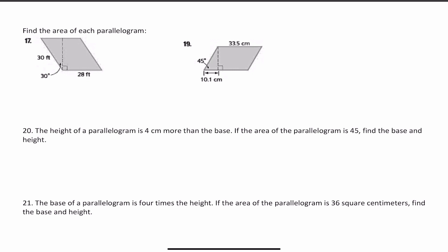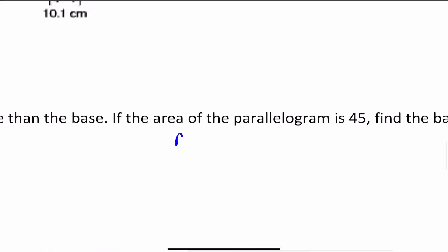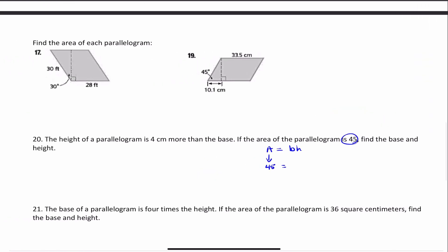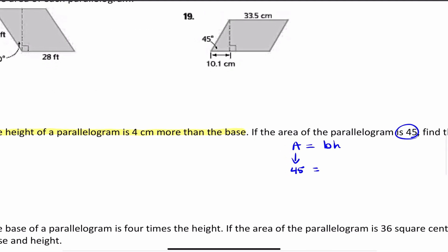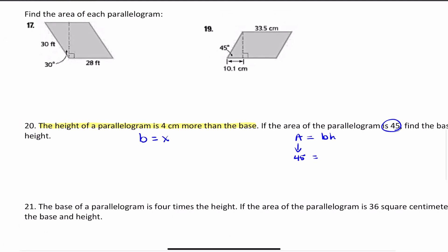The height of a parallelogram is 4 centimeters more than the base. If the area of the parallelogram is 45, find the base and the height. I know we're dealing with the area of a parallelogram: A equals base times height. The area is already given, so I replace A with 45. I don't see an actual value for the base or height — the only given information is that the height is 4 centimeters more than the base. We don't know the base, so I'll say B equals X.